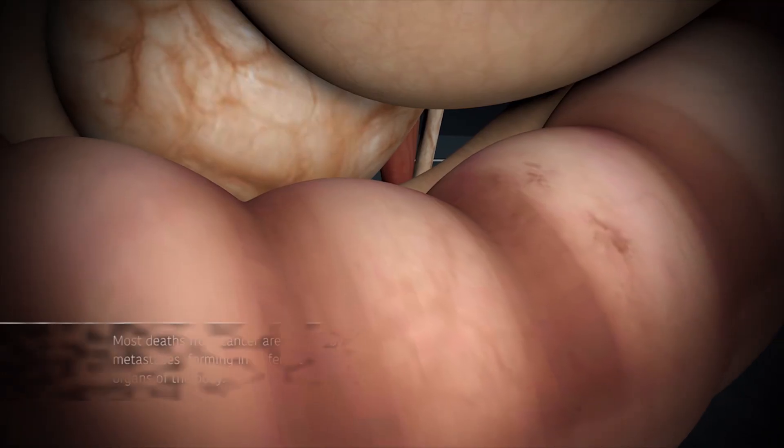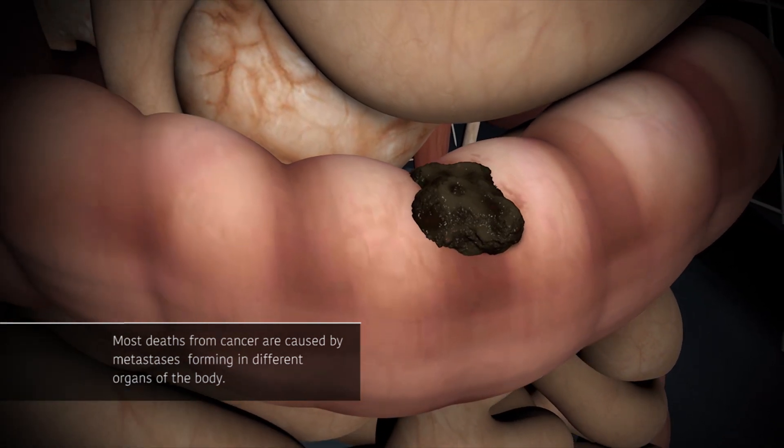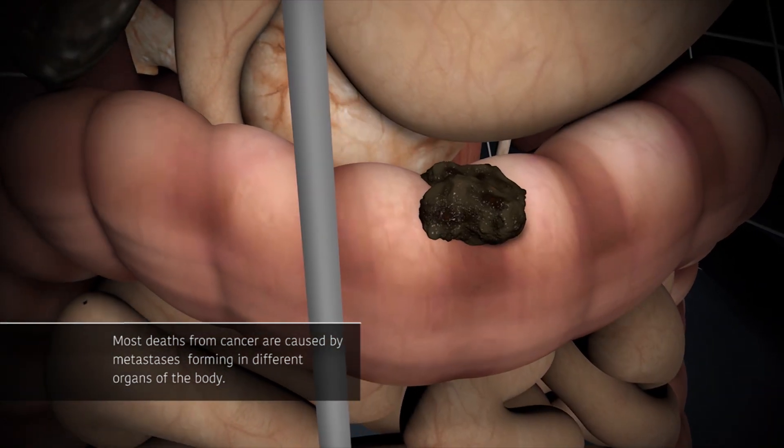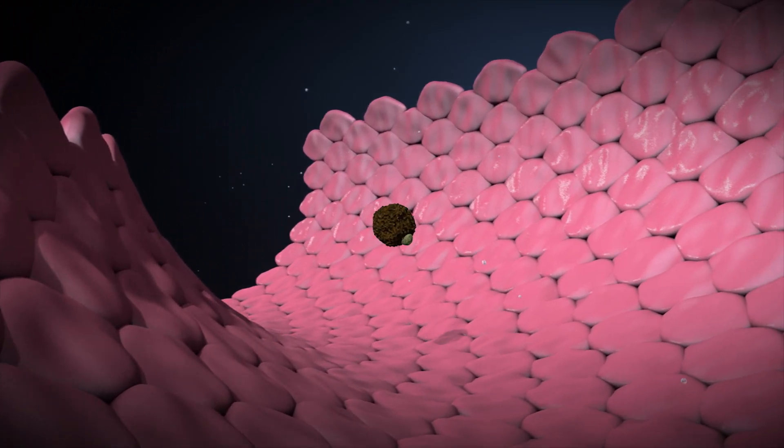Most deaths from cancer are caused by metastases. Several forms of metastases develop because cancer cells have hijacked the fractalkine system which normally serves in our innate immune system.